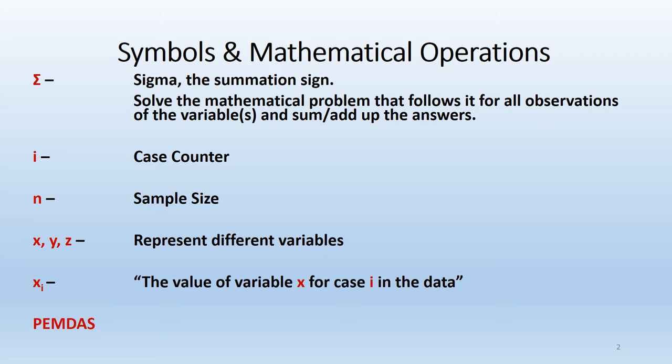Then variables, typically things towards the end of the alphabet such as x, y, and z, are simply placeholders to represent different variables. And finally, you'll see where we have that little x sub i. This incorporates both variable x and the case counter i. When we see this in a formula, it's telling us to insert the value of variable x for case i in the data.